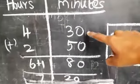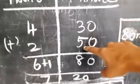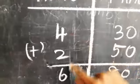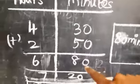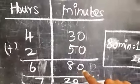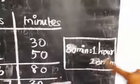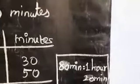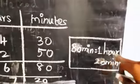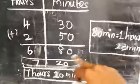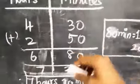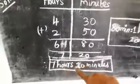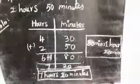Add the minutes: 30 plus 50 equals 80 minutes. Then 4 plus 2 equals 6 hours. Now 80 minutes is more than 60, so 80 minutes equals 1 hour 20 minutes. Carry the 1 hour over: 6 plus 1 equals 7. Therefore the answer is 7 hours 20 minutes.